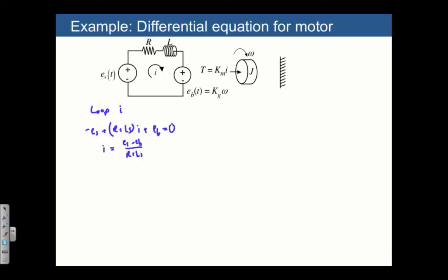Similarly, we can look at the mechanical side of the system where we sum the torques, and that's going to be T equals J times S times omega, or J omega dot. Of course, we can substitute in our motor laws. So we have Km times I for the torque, and then on the electrical side, the back EMF is kg omega over R plus LS.